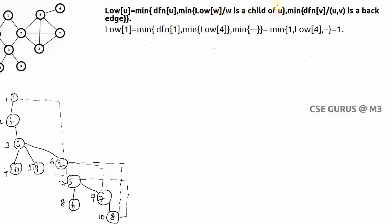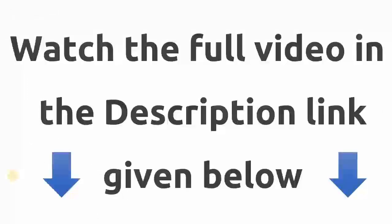So low(1) = minimum of { dfn(1), low(4), dfn(v) for back edges (u,v) of 1 }. Vertex 1 has no back edges, so that part is a hyphen. Thus low(1) = minimum of { 1, low(4) } = low(4), since we don't know low(4) yet. Similarly, we'll proceed to compute low values for subsequent vertices.